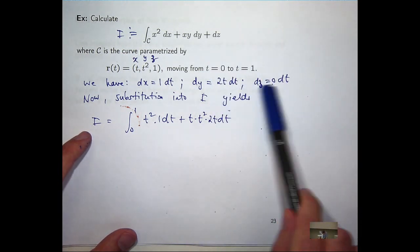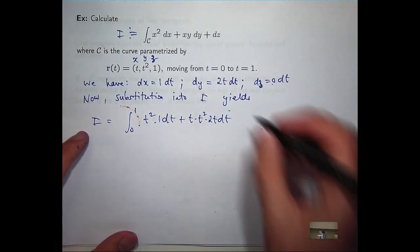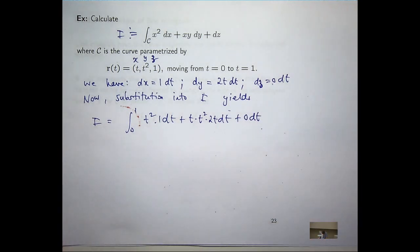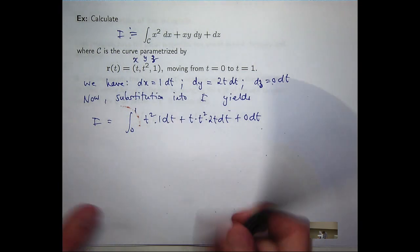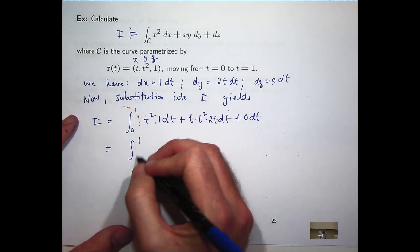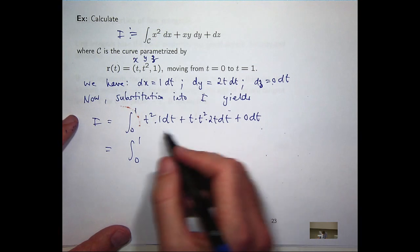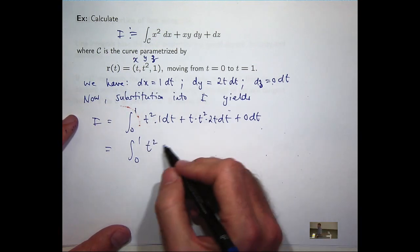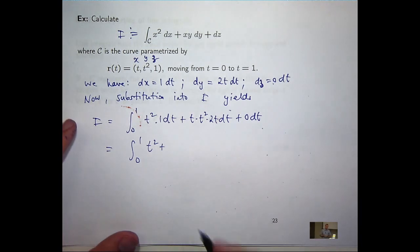And dz is just 0 dt. That's not going to contribute anything. Let's take these common factors of dt out the front. I'm going to get a t squared there, and a 2t to the power 4.